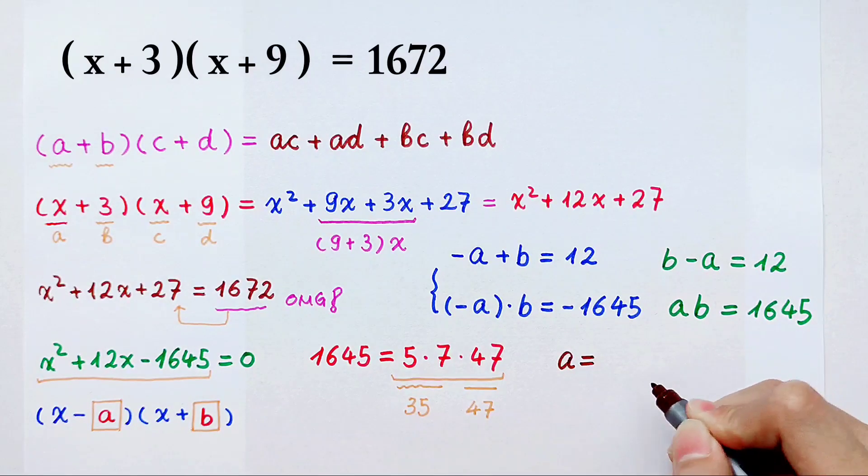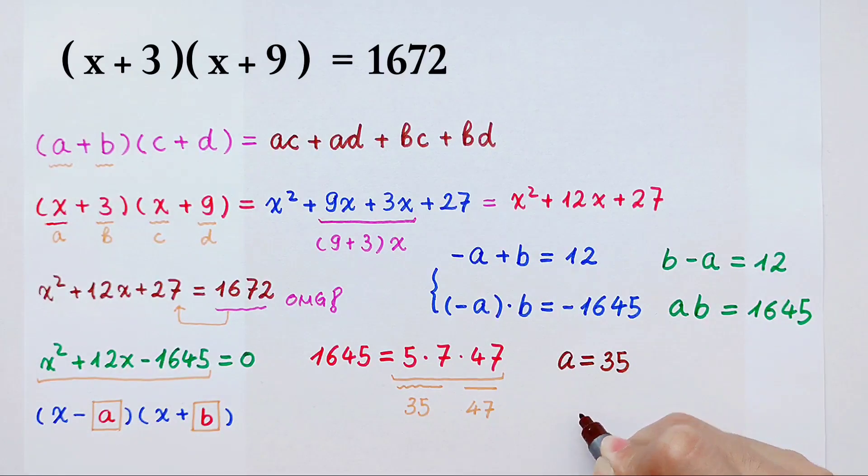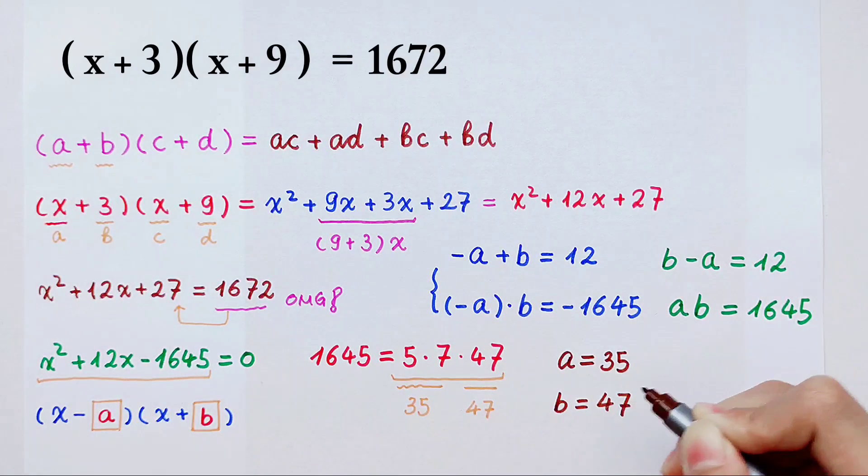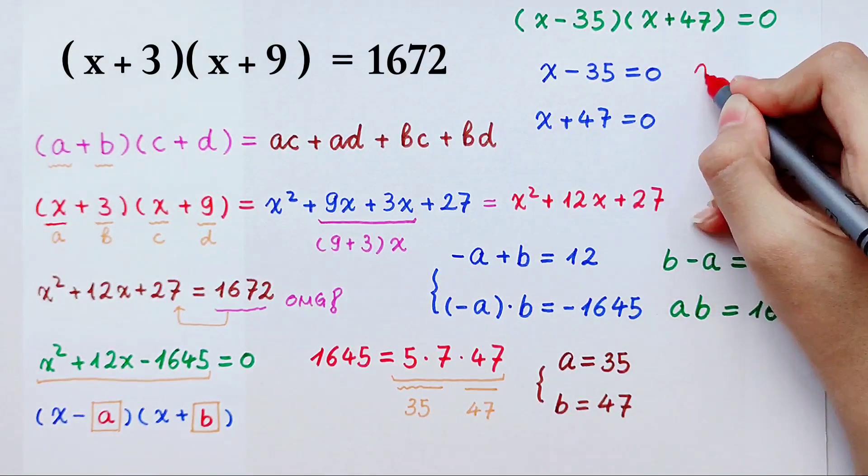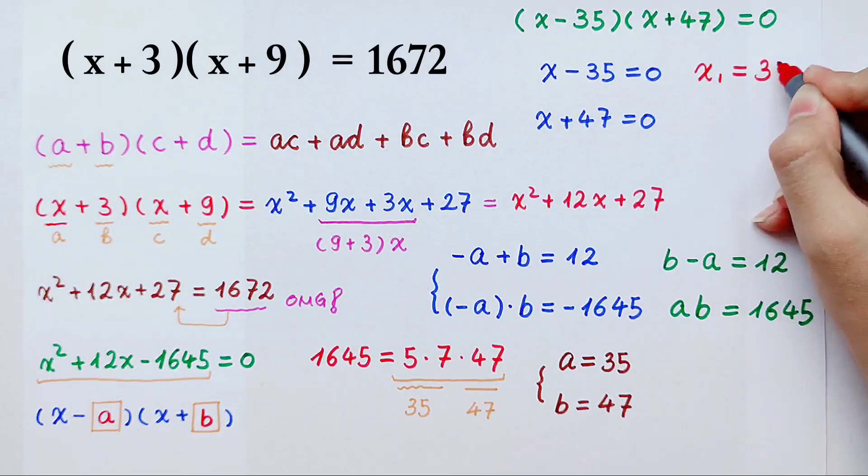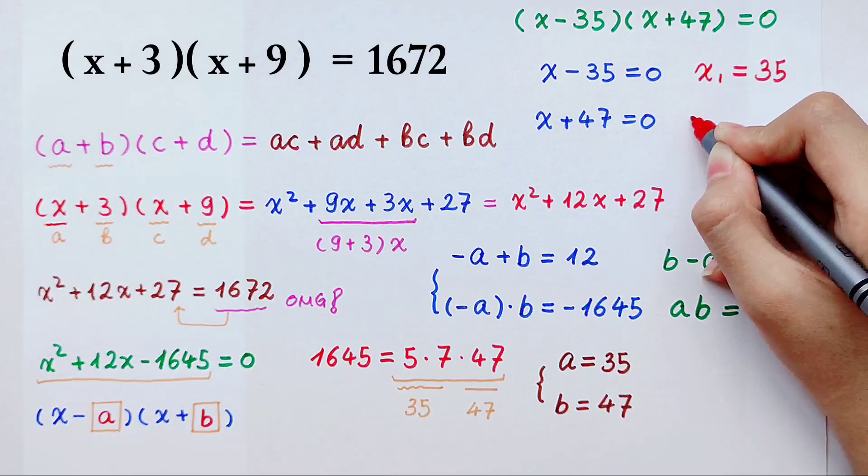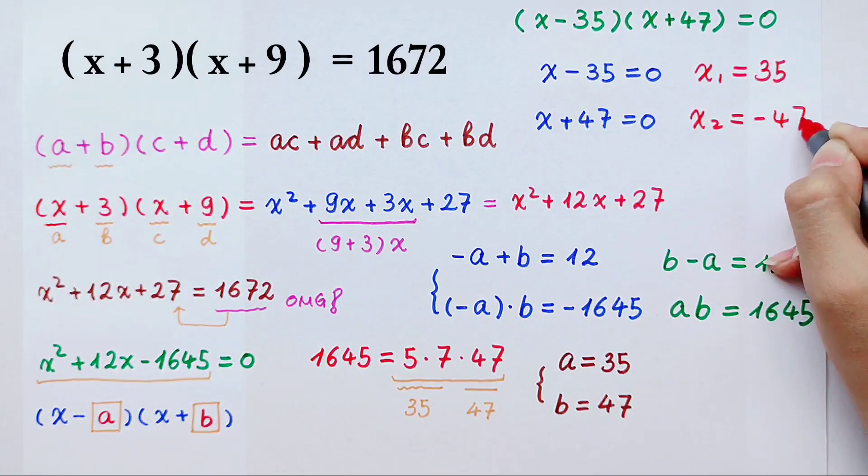So a is what? A is 35. And b is 47. So here a is 35 and here b is 47. This, we can get x1. The first root is that x is equal to 35. And the second root is that x is equal to negative 47.